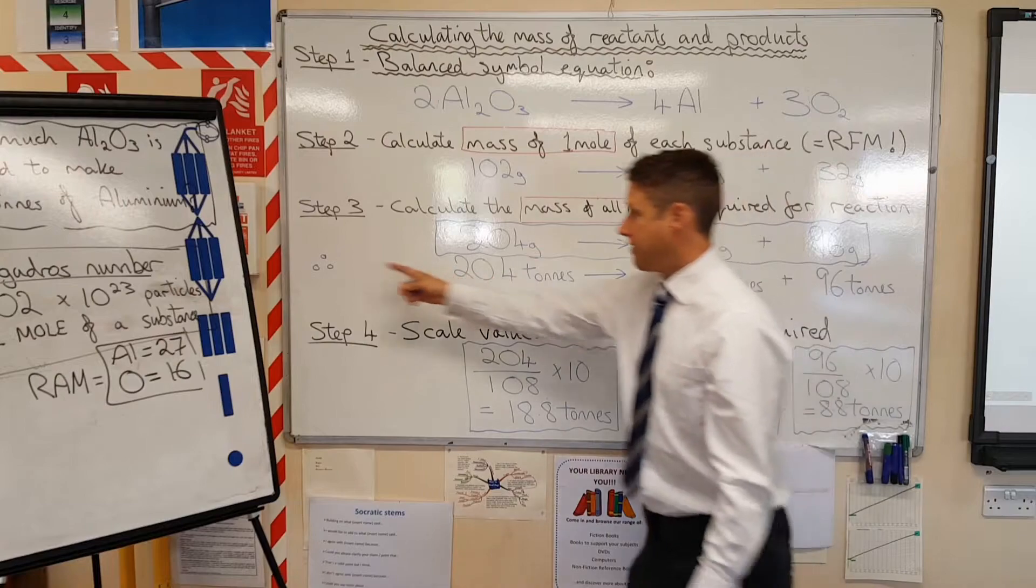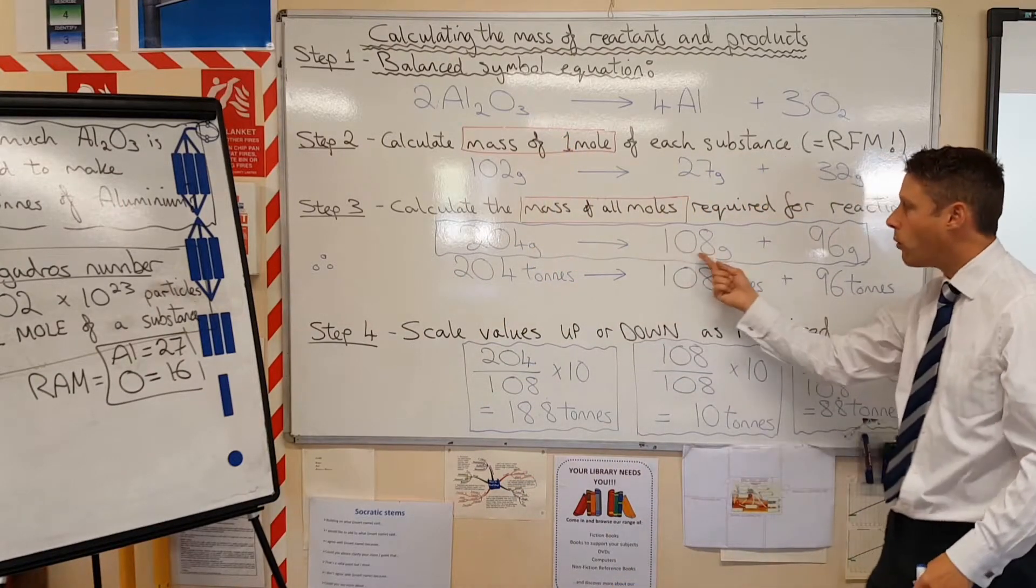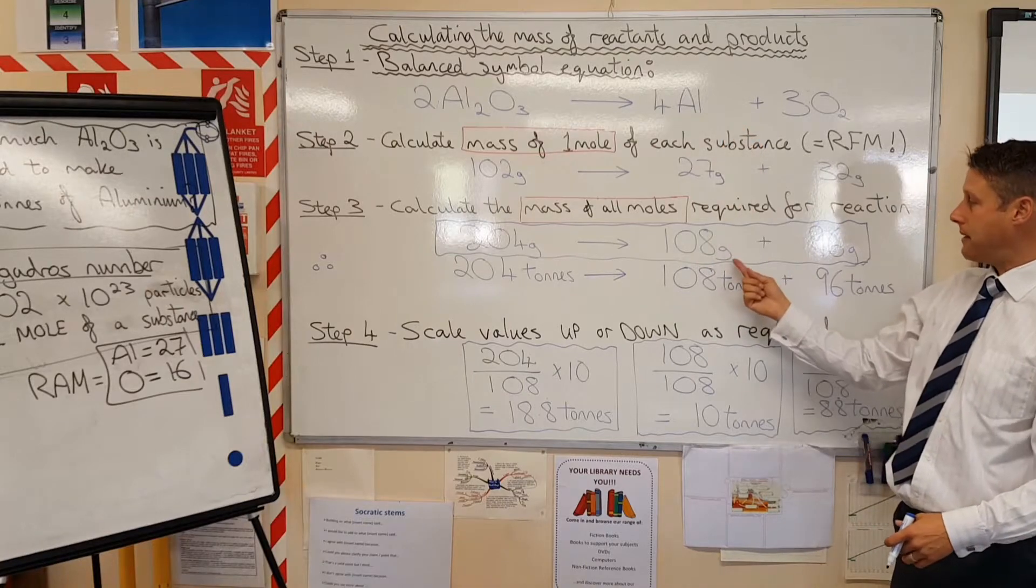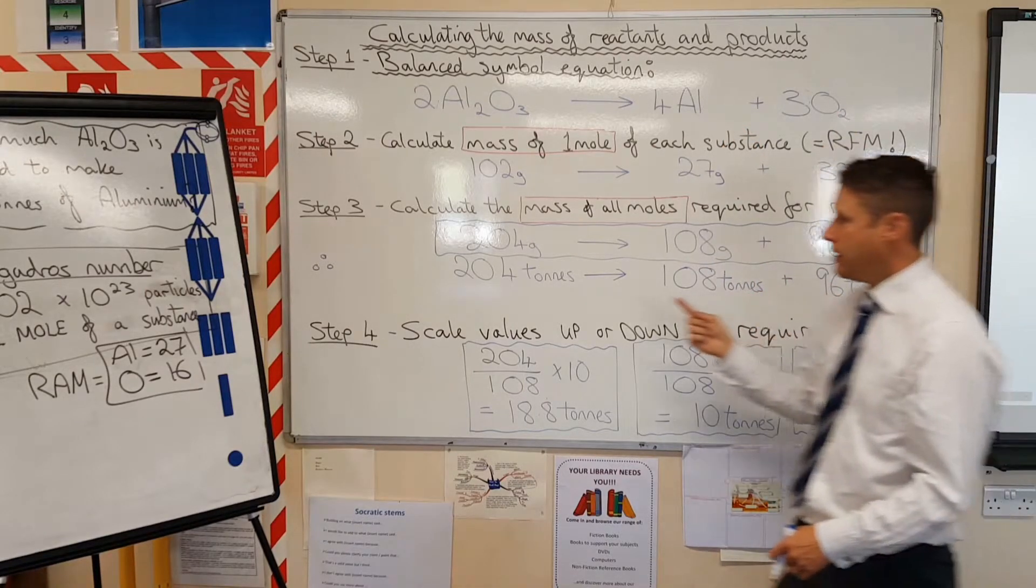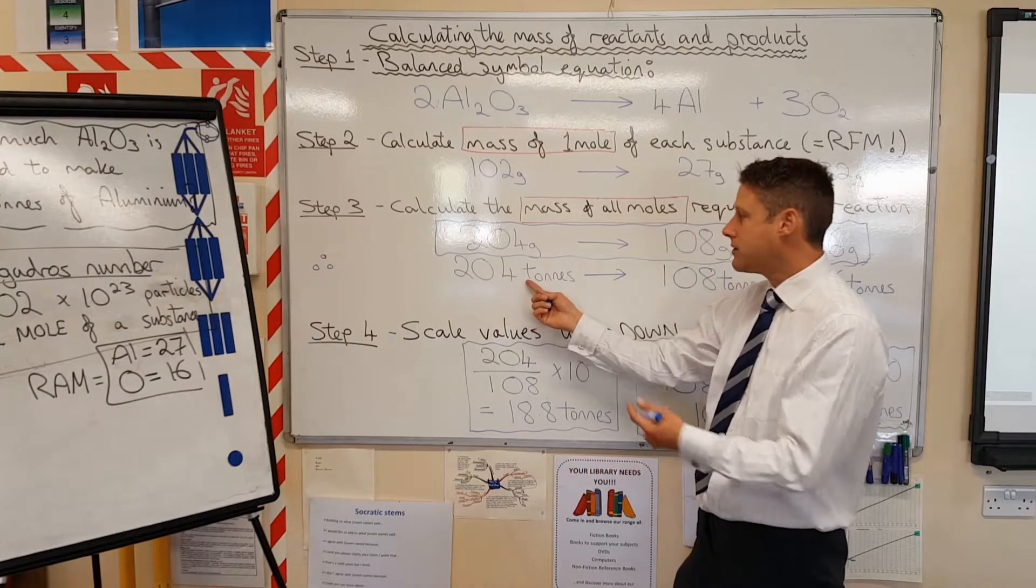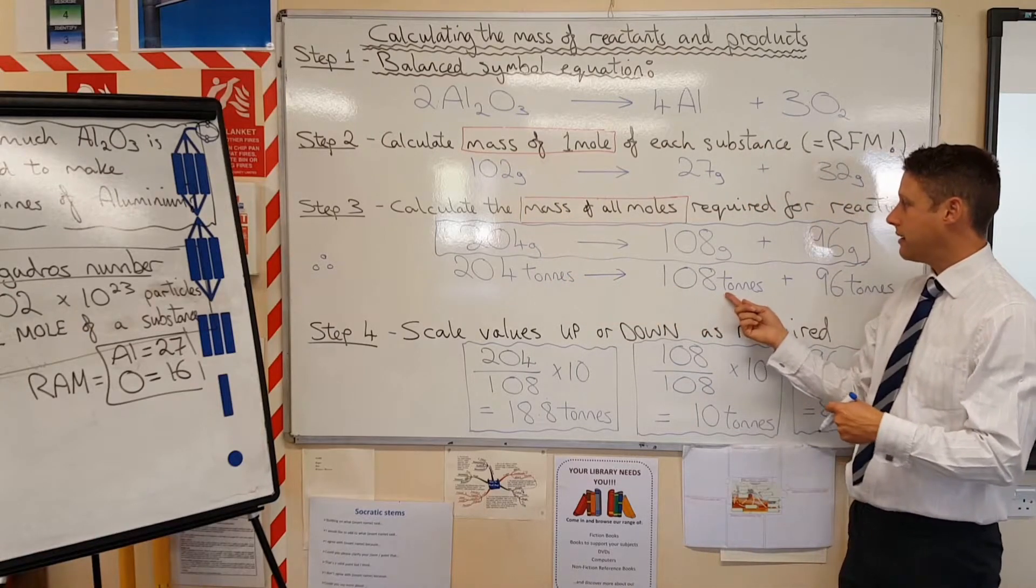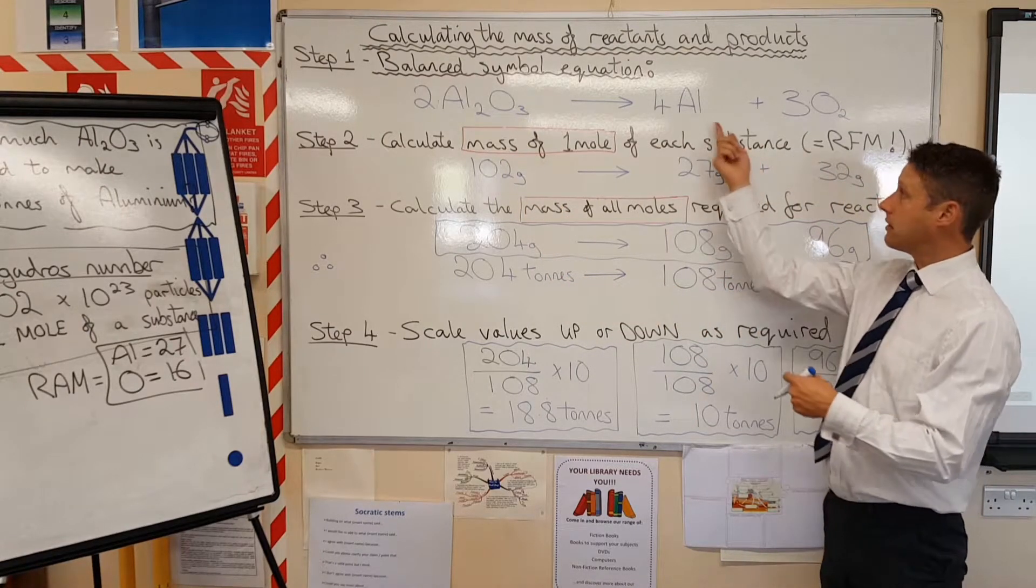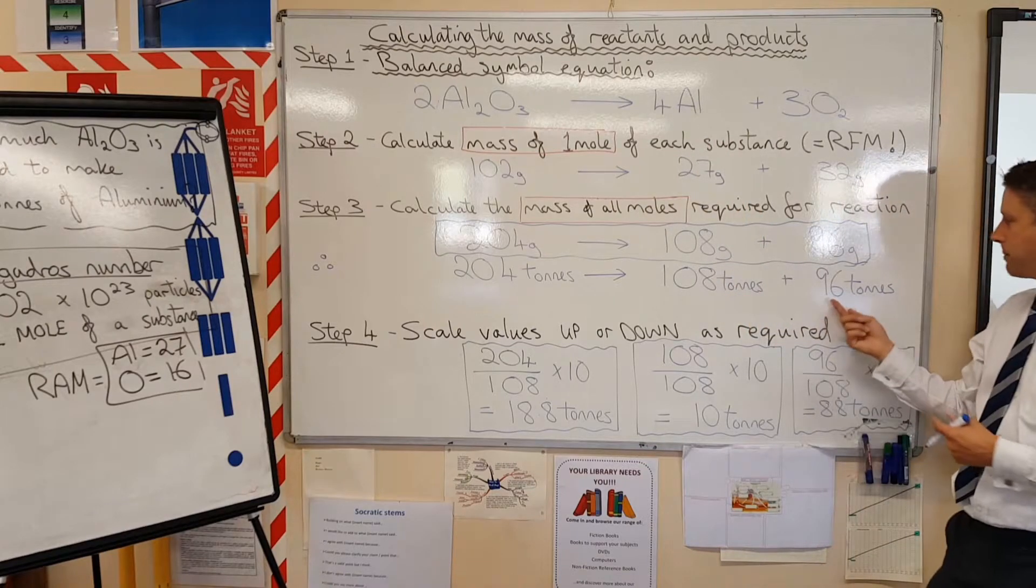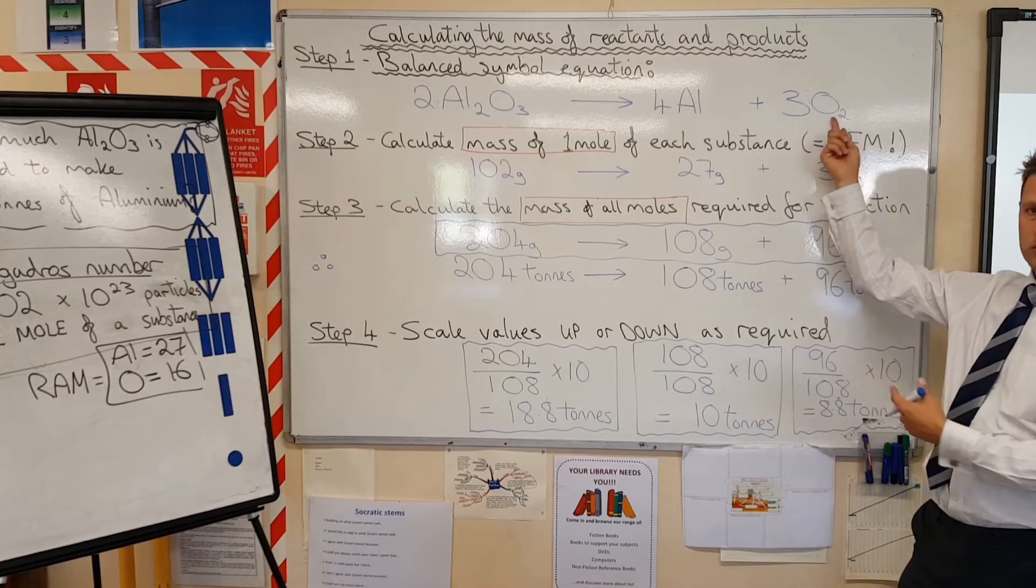What we could say is, therefore, if 204 grams of aluminum oxide is needed to make 108 grams of aluminum and 96 grams of oxygen, then it would make sense that if we had 204 tonnes of aluminum oxide, we would make 108 tonnes of aluminum. And we would be making, at the same time, 96 tonnes of oxygen.